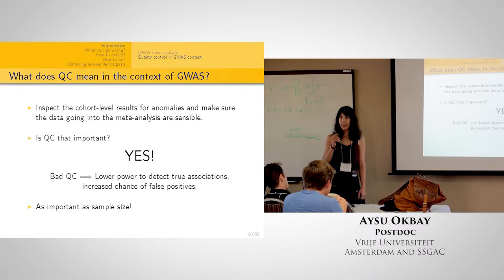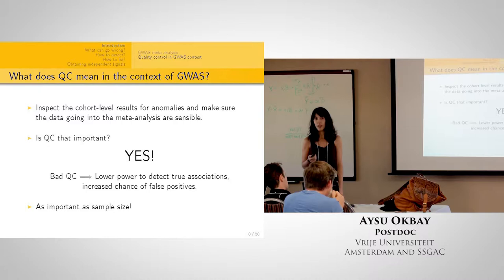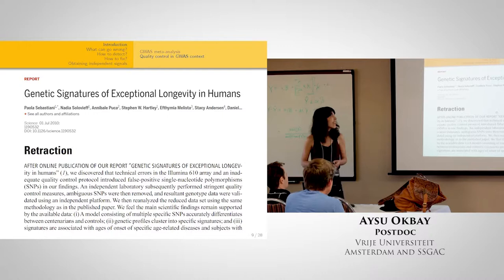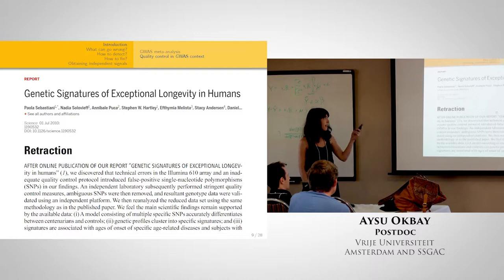Quality control means inspecting the results that cohorts upload and making sure everything is sensible. It's very important because if you add noise to your sample, or worse, reverse signal, adding more samples won't really help. You have to make sure the results you're meta-analyzing are actually sensible. If you don't do stringent QC, serious problems can occur.